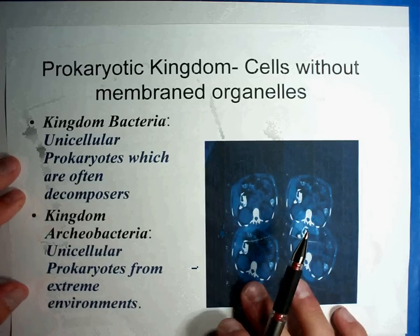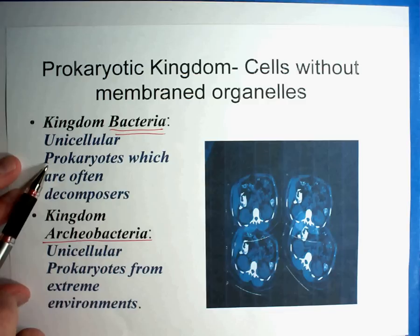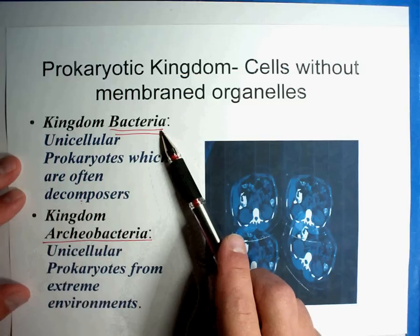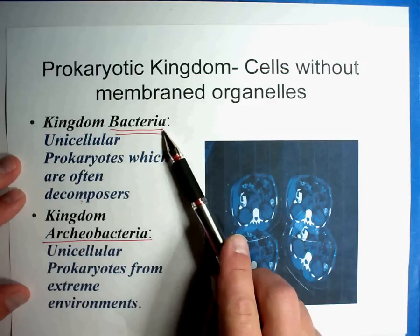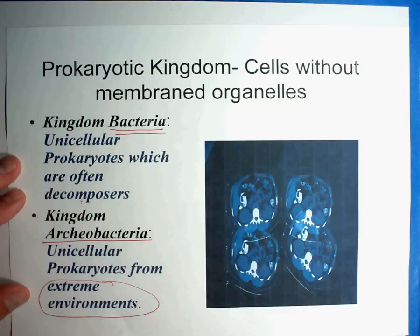Finally, kingdom Bacteria and Archibacteria. Bacteria are typically one-celled prokaryotes — they don't have a nucleus and are very simplistic cells, but they're often decomposers that break things down. For example, bacteria in the human gut help break down food to extract nutrients. Archibacteria are found in extreme environments — scientists have found bacteria living in hot springs, sulfur springs, and very cold environments. Archibacteria are the ones found in the most extreme environments.